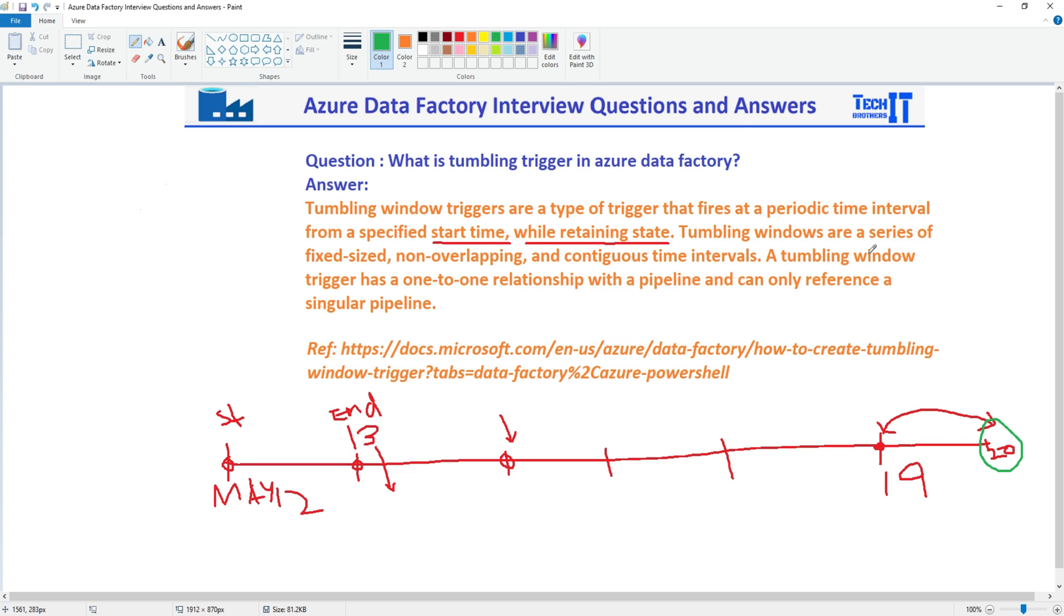Tumbling windows are series of fixed width, so you see that here it is only one day. Non-overlapping, so they are not overlapping. So this is May 12th starting and then you have May 13th and from May 13th to May 14th and all that.